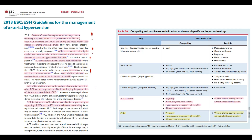ACE inhibitors and ARBs are considered the most effective antihypertensive agents for renal protection, especially in chronic kidney disease caused by diabetes. They can also prevent hypertension-mediated organ damage, which is extremely valuable in patients with severe hypertension. However, both ACE inhibitors and ARBs are contraindicated during pregnancy due to their teratogenic effect, in cases of hyperkalemia, and in bilateral renal artery stenosis. We should be very careful with these agents in women of childbearing potential.